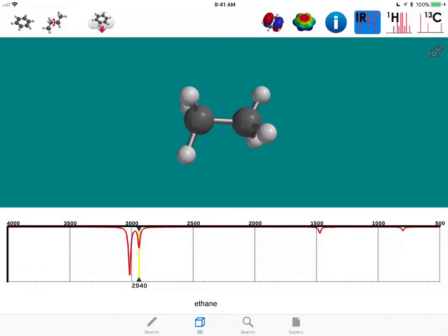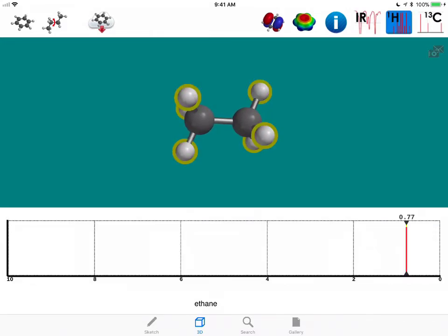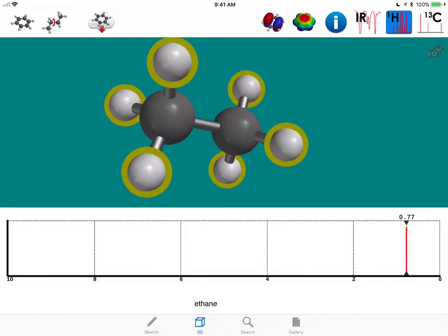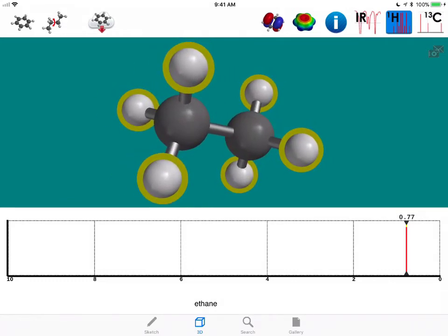Let's look at the proton NMR. As you can see in the proton NMR, there's only one unique set of protons for ethane. They're highlighted here, and the chemical shift is at 0.77 parts per million.